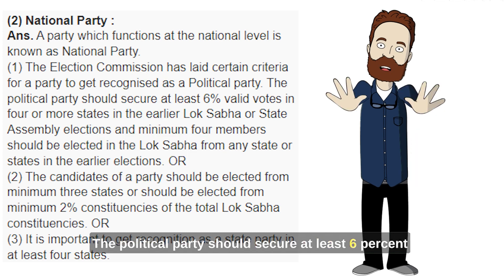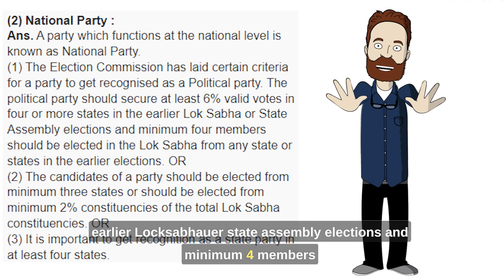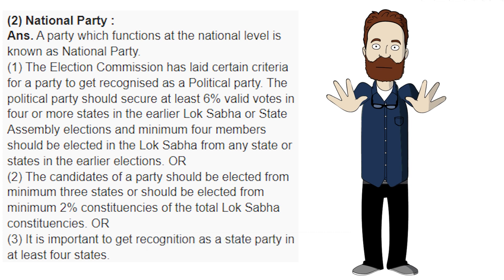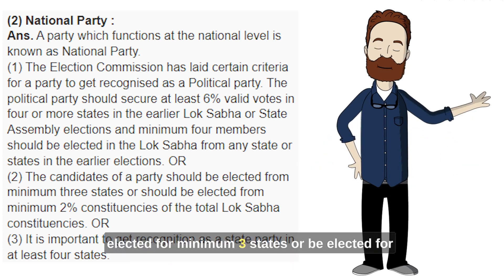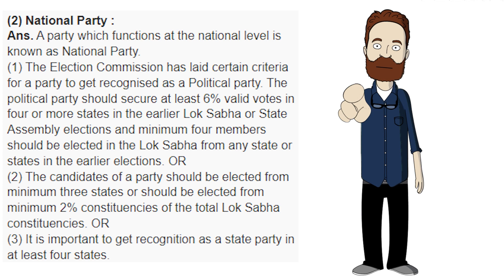1. The political party should secure at least 6% valid votes in 4 or more states in the earlier Lok Sabha or State Assembly elections, and a minimum of 4 members should be elected in the Lok Sabha from any state or states in the earlier elections. Or, 2. The candidates of a party should be elected from minimum 3 states, or should be elected from minimum 2% constituencies of the total Lok Sabha constituencies.